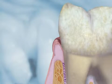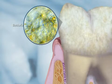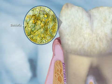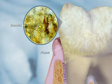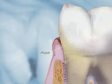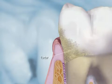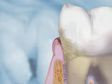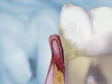Our mouths are full of bacteria. Bacteria constantly forms a sticky, colorless plaque on the teeth. Plaque that is not removed hardens to form bacteria-harboring tartar, also known as calculus. As calculus forms between the tooth and the gum tissue, inflammation of the gums occurs, which is known as gingivitis.